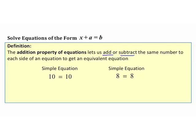Let's take a look at two simple equations. Starting with 10 equals 10: if I add 2 to the left side and the right side, I end up with an equivalent equation, 12 equals 12. As long as I add the same thing to both sides of my equation, I still get a true statement. This simple property is going to allow us to solve equations.